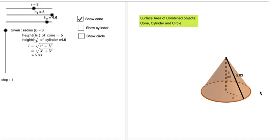We have to find out surface area of the cone first. So pi rl is the surface area, radius is 3, height is 5. Here h1 is the height of the cone.